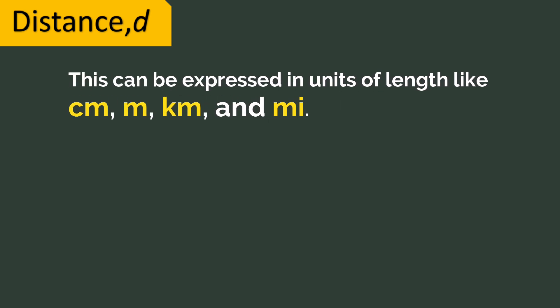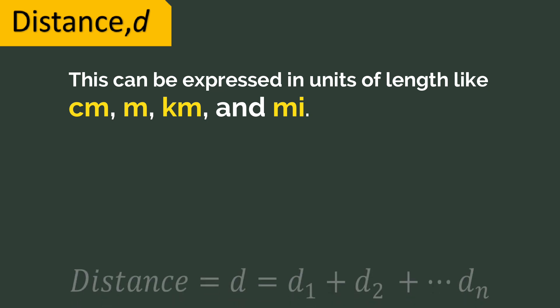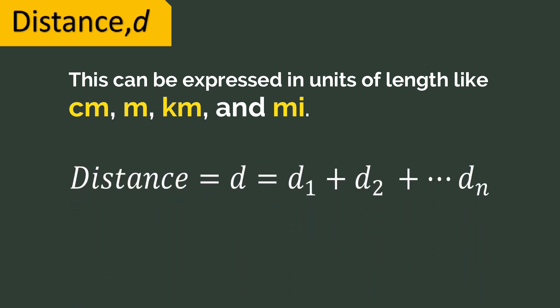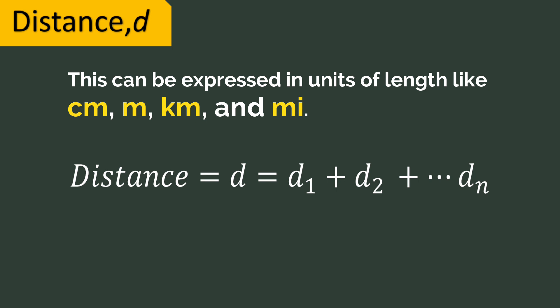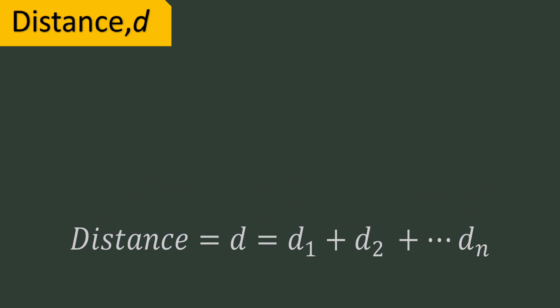This quantity can be expressed in units of length like centimeter, meter, kilometer, and mile. Based on the definition, the total distance can be determined by getting the sum of the distances traveled by the object. In equation, distance or d is equal to d₁ plus d₂ plus the other distances traveled by the object.